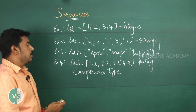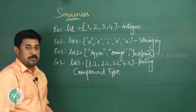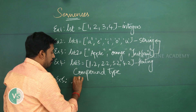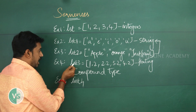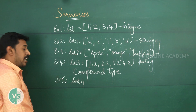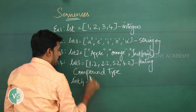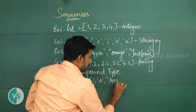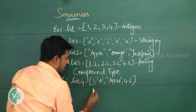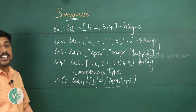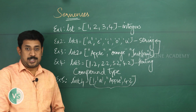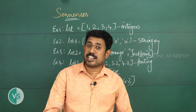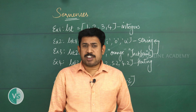So the list is said to be a compound data type. How is it possible to define a list with all data types? Yes, we can. In example five, list4 contains an integer value, a character value, a string value, and a direct string — this is called a compound data type. Also, list is a mutable type.